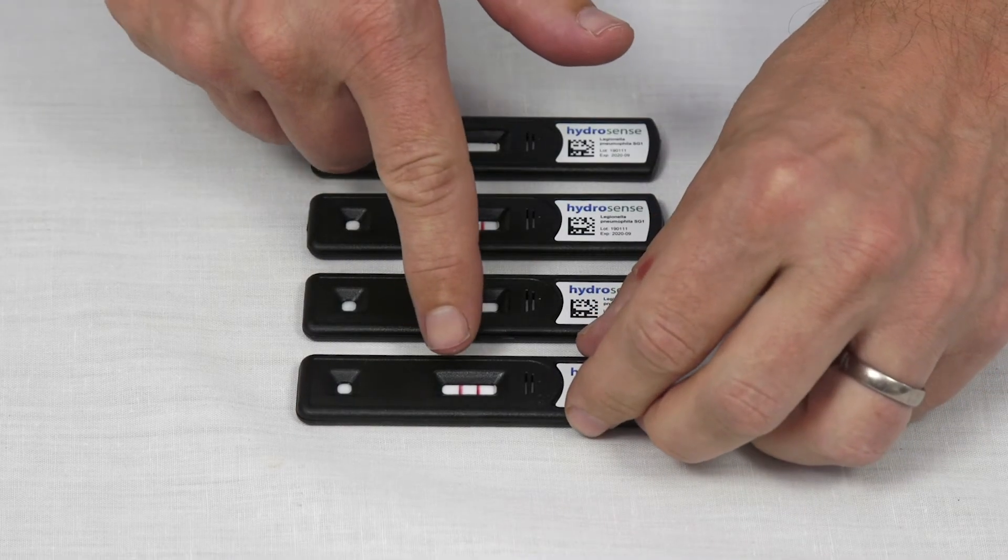After 25 minutes of running time, the test can be read. The test is composed of two lines, a test line and a control line. If both lines are present, then Legionella pneumophila serogroup 1 has been detected above the cutoff of the test kit.